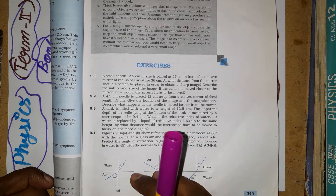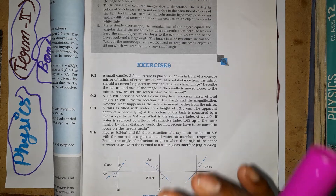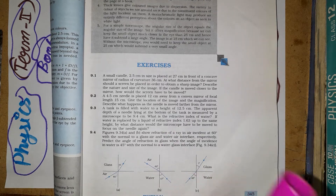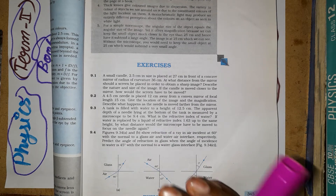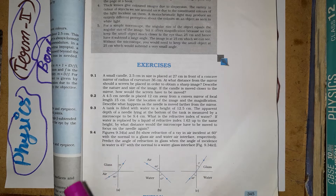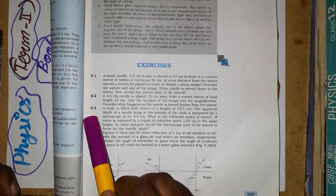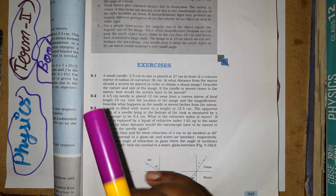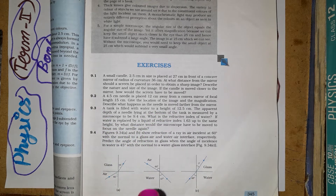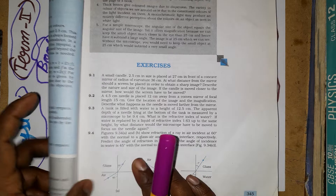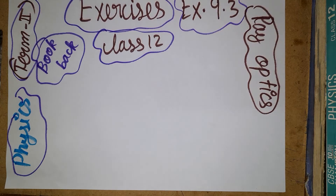Hello students, today we are going to learn an NCERT exercise problem. It's for Class 12 Physics, Chapter 9, Problem 3. The question is from the Ray Optics chapter. We are going to discuss the concept of real depth and apparent depth.